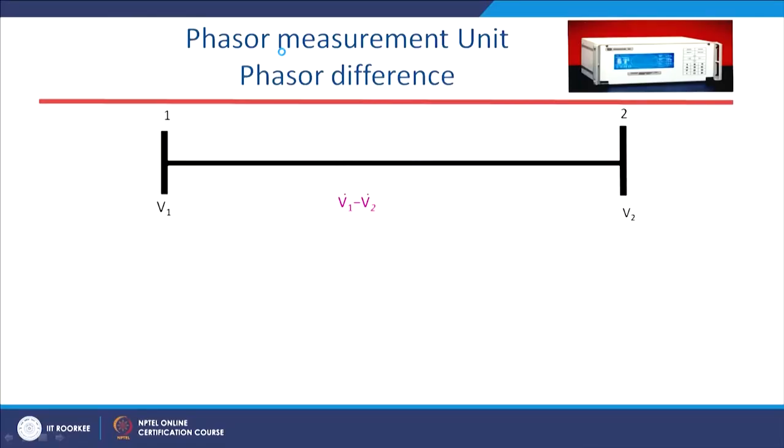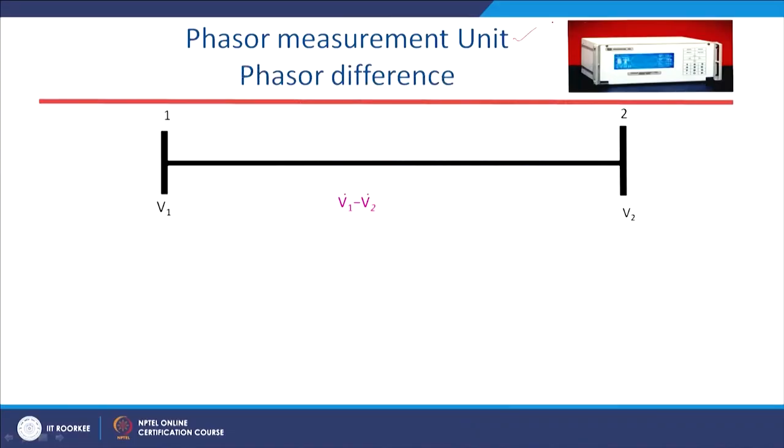Now, the very important part of the wide area monitoring system is the phasor measurement unit (PMU) — the heart of WAMS. Without this PMU, the wide area monitoring system has no meaning. PMU stands for Phasor Measurement Unit, and as the name suggests, it measures the phasor of the voltage and current.